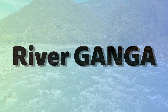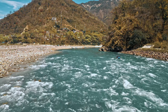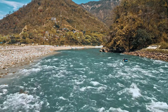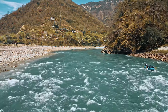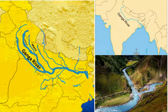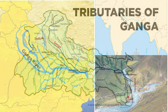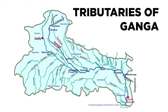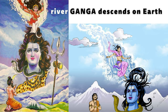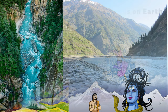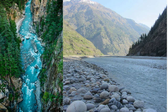River Ganga: The holy river Ganga and its tributaries are very important in the Ramayana. Bhagirata, who brought Ganga to the earth, is an ancestor of Lord Rama. River Ganga is deeply connected to Rama and the Ramayana.